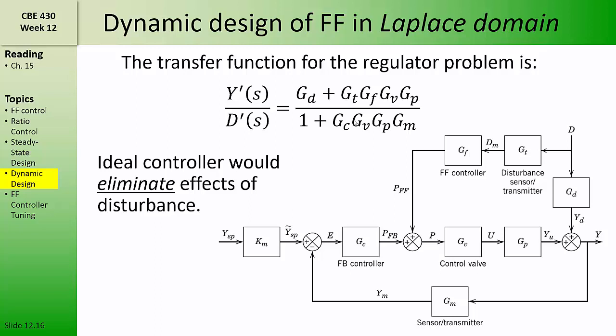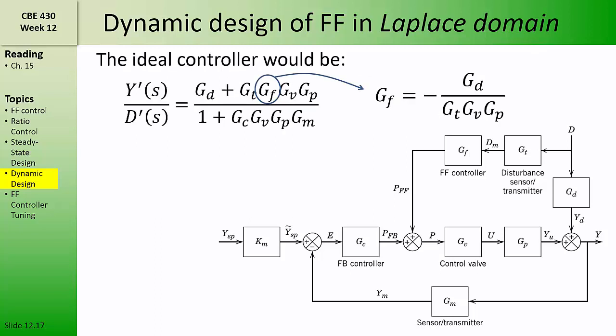Now, an ideal feed-forward controller would be designed so as to eliminate the effects of the disturbance. We can find what that ideal feed-forward controller should be by setting the numerator of the regulator transfer function equal to zero. If the numerator of the regulator transfer function is zero, then the disturbance has no impact on the controlled variable. So, setting this numerator to zero and solving for GF, we find that our feed-forward controller ideally should be minus GD over GT, GV, GP. And that will ensure that the contribution from D going through GD, when it is added to the contribution of D coming through the feed-forward control loop, sums to exactly zero. And therefore, the disturbance has no effect on the controlled variable.